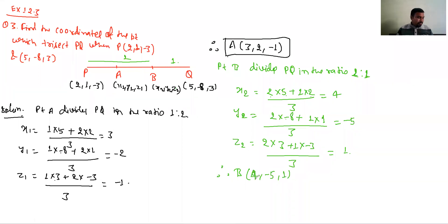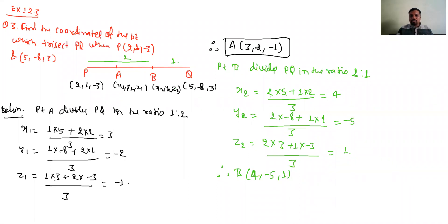To B ka coordinate ban gaya (4, -5, 1). Pehla (3, -2, -1), doosra (4, -5, 1). Answer ho gaya: A = (3, -2, -1) aur B = (4, -5, 1).